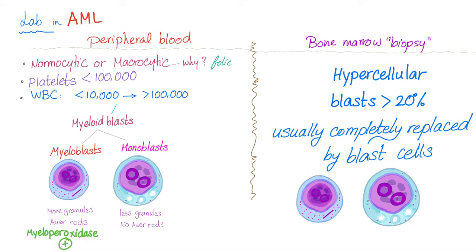Lab results in AML: peripheral blood shows normocytic anemia, possibly macrocytic due to folate deficiency, and thrombocytopenia. The white blood cell count can range from less than 10,000 to greater than 100,000. You will see myeloid blasts such as the myeloblast with Auer rods or the monoblast with vacuolated cytoplasm. Auer rods are myeloperoxidase-positive azurophilic needle-shaped granules. Bone marrow biopsy shows hypercellularity with blasts greater than 20% — myeloid blasts.